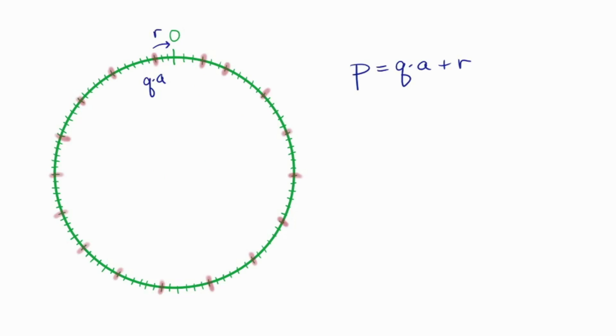To find this exact multiple, or these two multiples surrounding 0, we can call on the division algorithm. Namely, divide p by a, which means to write p as q times a plus r, where q is the quotient and r is the remainder. This is just the long division that you learned when you were in grade school.